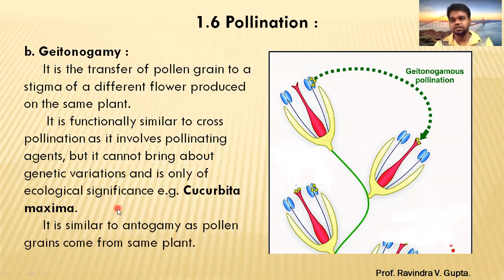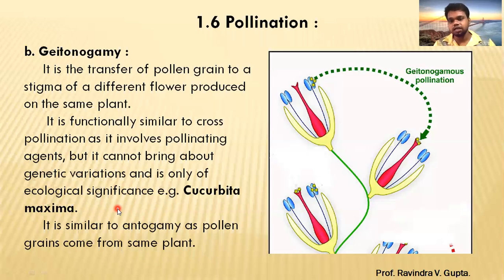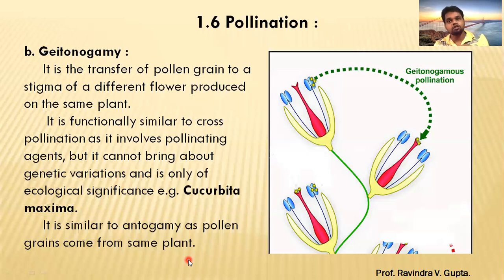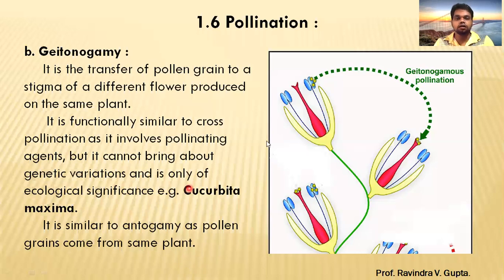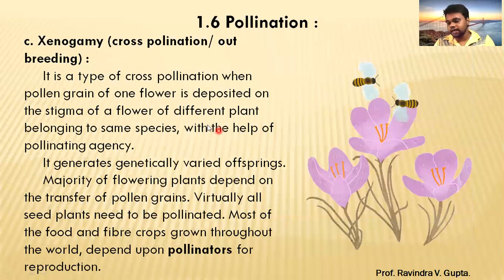So what is geitonogamy used for? It supports ecological succession — the numbers of seeds produced are very high, and the plant will easily produce seeds and grow. Geitonogamy is similar to autogamy in that the pollen grain comes from the same plant, but in autogamy pollination is within one flower, while in geitonogamy it is between two flowers on the same plant. This covers the second type of pollination — geitonogamy.